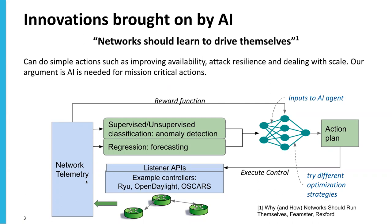So what are the innovations which AI is going to bring? In recent years, network research has seen a lot of discussion on using AI. There is the famous quote that networks should learn to drive themselves. In our approach, we argue that AI can do simple actions such as improve availability or resilience and tackle security challenges. Our argument is that we are building AI for mission-critical actions, specifically traffic engineering.